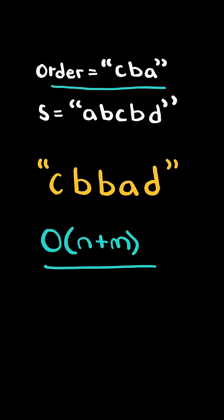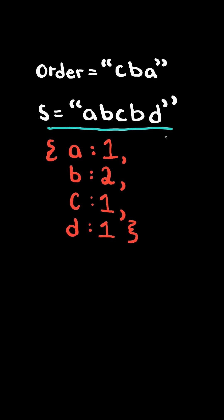We will solve this in O of the length of order and S time. First, we will create a frequency hash map of S. We'll then create a result array.